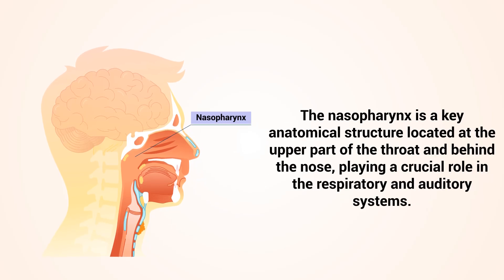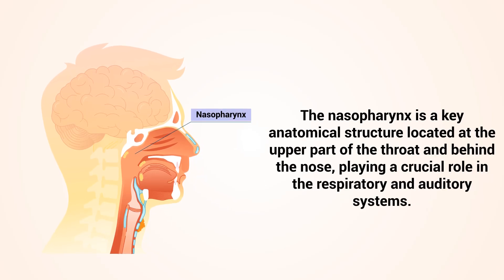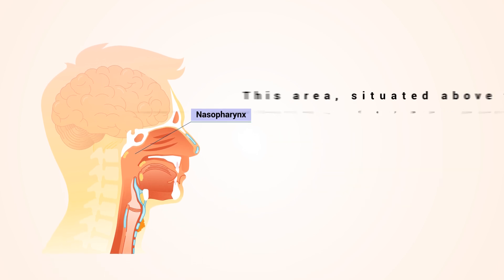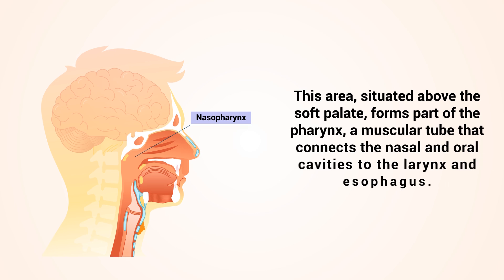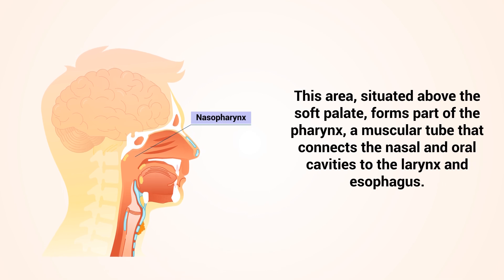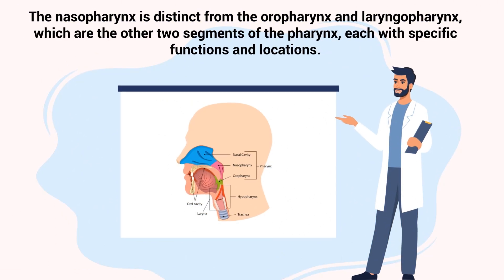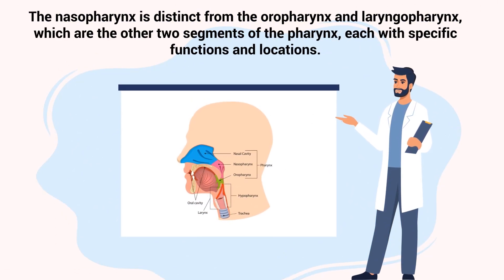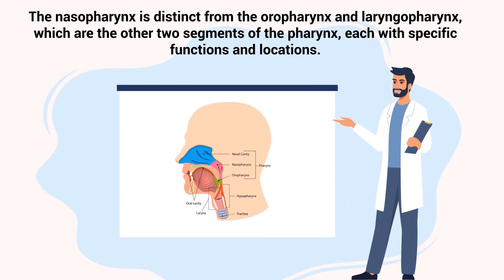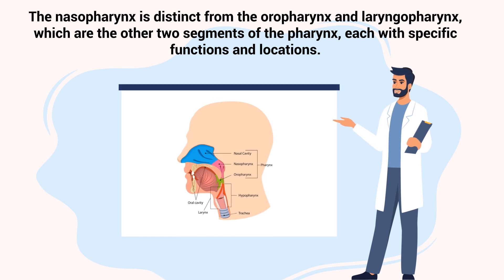The nasopharynx is a key anatomical structure located at the upper part of the throat and behind the nose, playing a crucial role in the respiratory and auditory systems. This area, situated above the soft palate, forms part of the pharynx, a muscular tube that connects the nasal and oral cavities to the larynx and esophagus. The nasopharynx is distinct from the oropharynx and laryngopharynx, which are the other two segments of the pharynx, each with specific functions and locations.